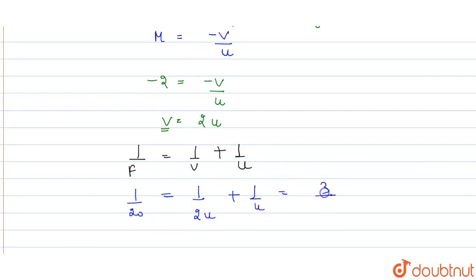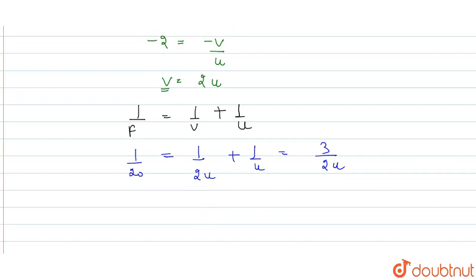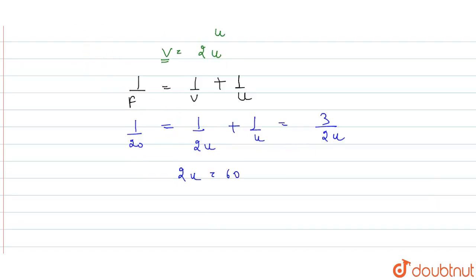So how much will it be? 3 upon 2u. And we can say that 2u equals 60. So that means u will be 30 cm.